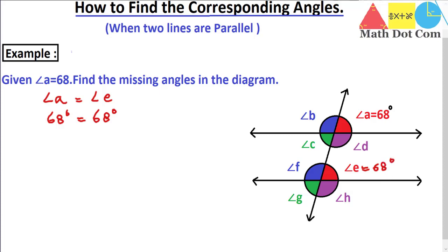Now what about the rest of the angles? Angles B and F are also corresponding angles, but since we don't know either one yet, we need a technique. One concept to keep in mind: a complete circle is equal to 360 degrees, and a half circle is 180 degrees.